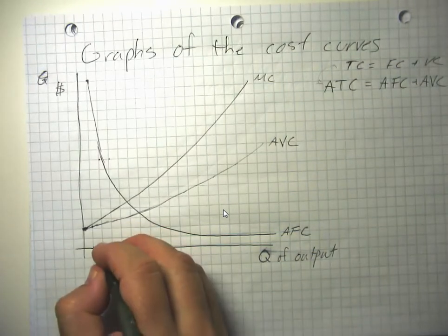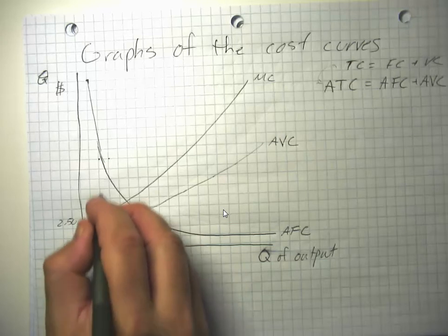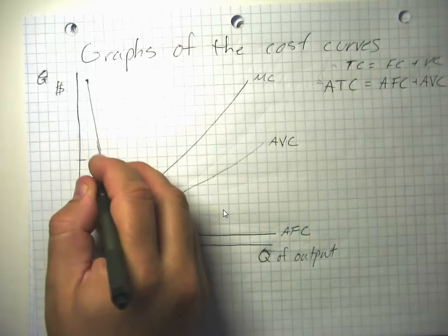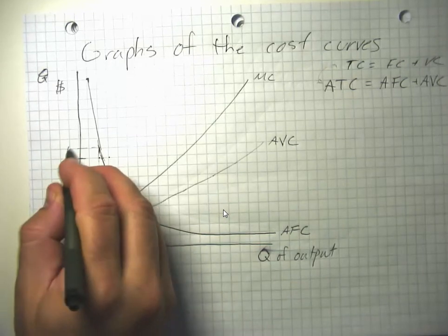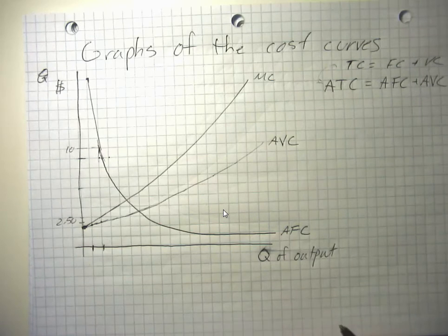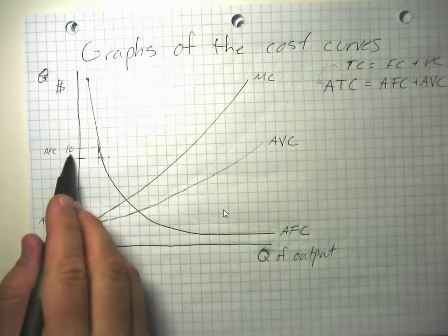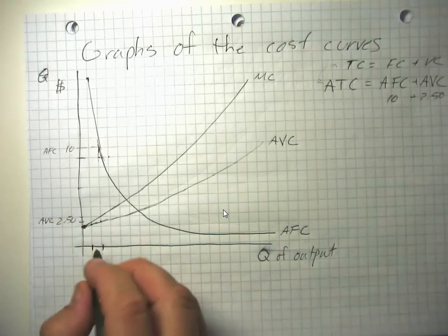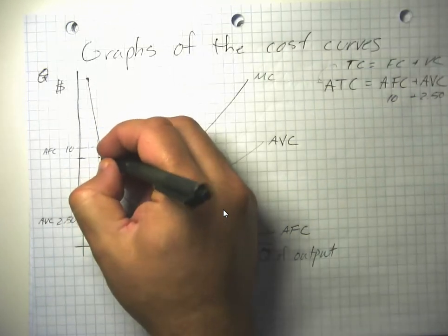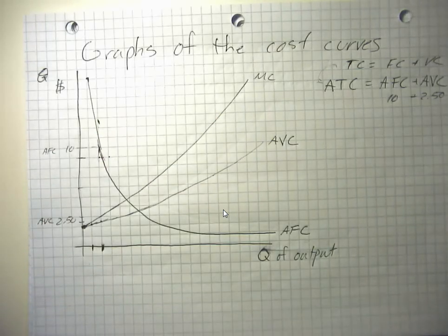For example, at two units of output, average variable cost is about $2.50 per unit and average fixed cost is $10 per unit. So our average total cost at quantity equals two is $10 of average fixed cost plus $2.50 in average variable cost, giving us $12.50 per unit. At that point, average fixed cost and average total cost are almost equal because fixed costs are large and variable costs are low.